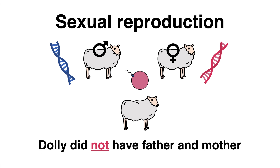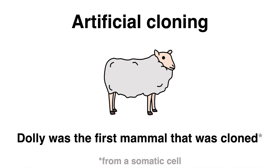Dolly did not have those biological parents. This special sheep was brought into life by artificial cloning. In 1996, Dolly was born as the first mammal ever cloned from a somatic cell.